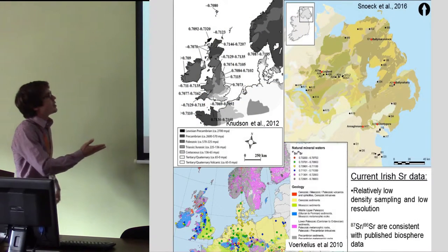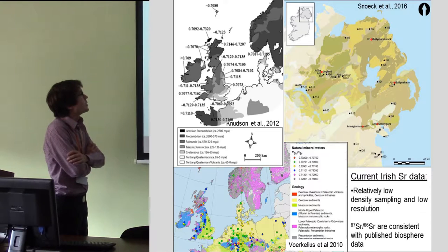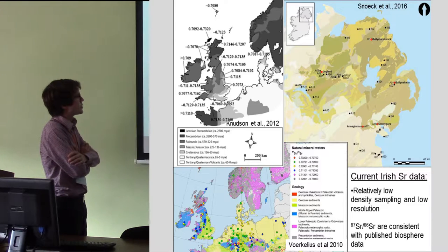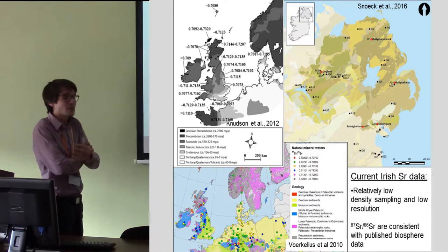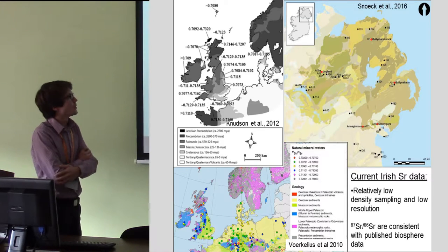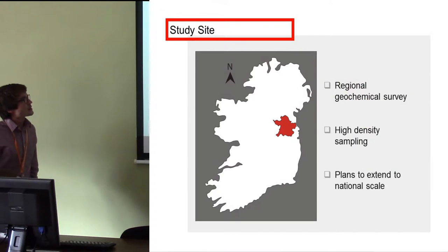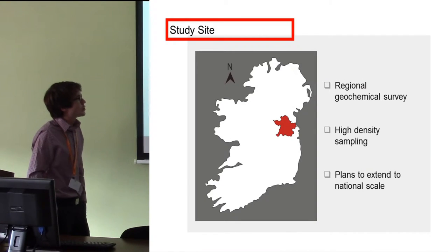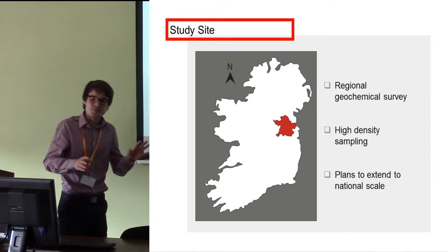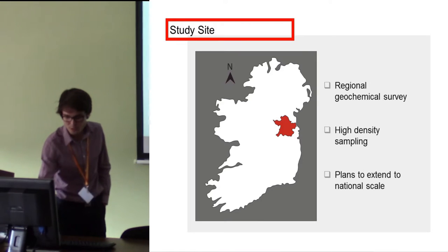We already have a few maps out there using different methods, but it's usually low-density sampling. That's why we wanted to look more into what's the best way to do high-density sampling, to not do useless work by using the wrong medium. The study site is County Meath in Ireland, where we have high-density sampling across a very varied geochemical region with a lot of different geological units.